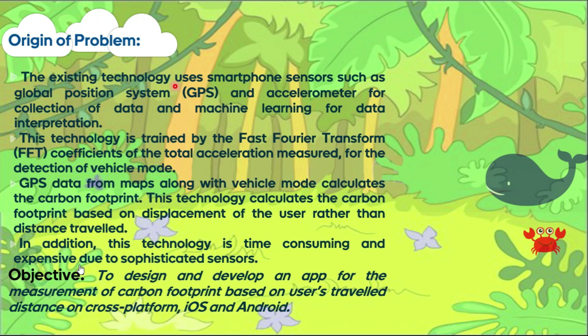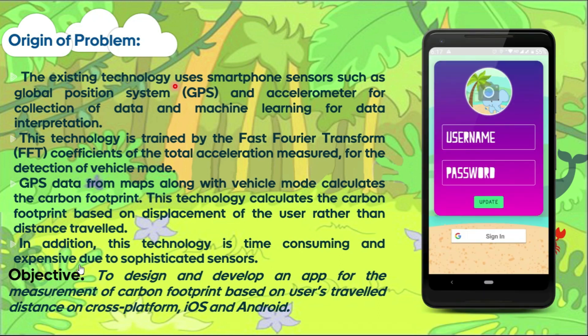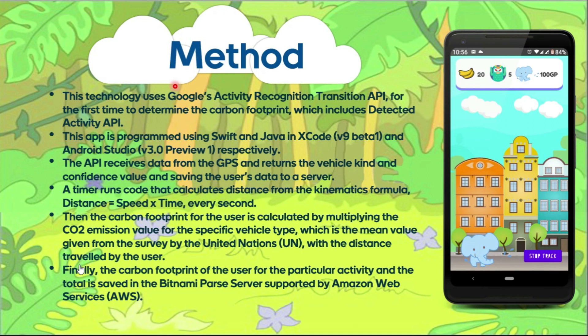The objective was to design and develop an app for the measurement of carbon footprint based on the user's travel distance, cross-platform on iOS and Android. The technology uses the latest Google Activity Recognition Transition API for the first time to determine the carbon footprint of the user, which includes the detected activity API. This takes in the location point that most location apps use such as Maps, and passes it to Google's Activity Recognition API, which tells you which mode of transition you used — vehicle, walk, run, or bicycle. This has high efficiency. The app is programmed using Swift and Java in Xcode version 9, with later updates using Xcode 11 beta and Android Studio version 3.6 preview 5.